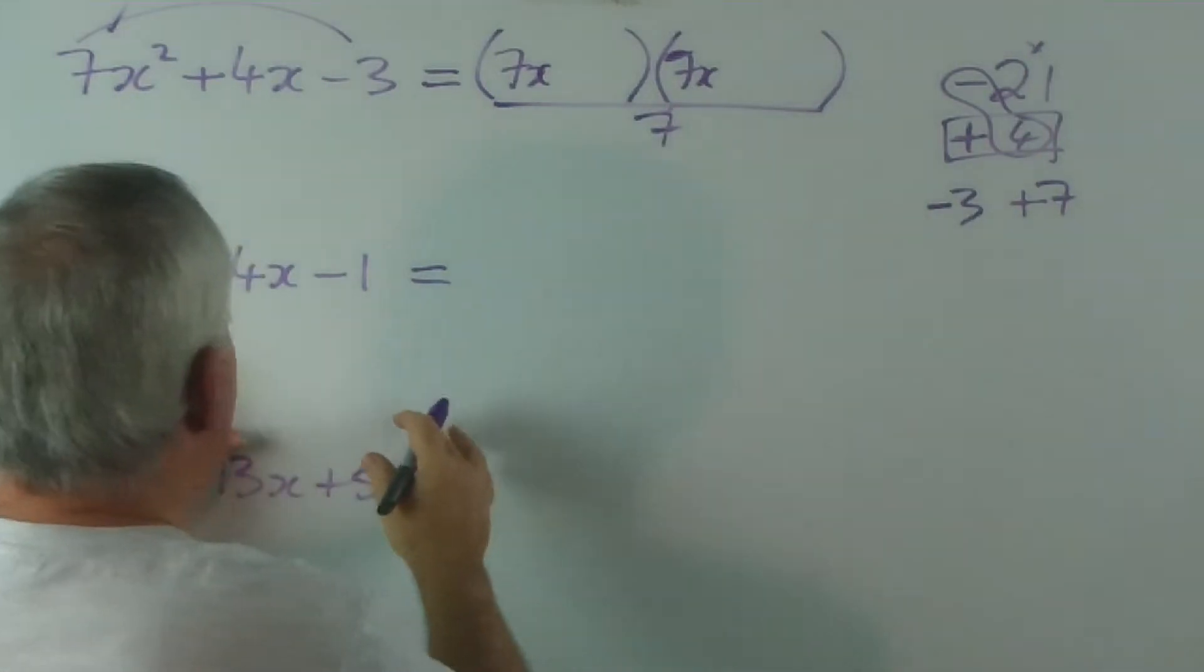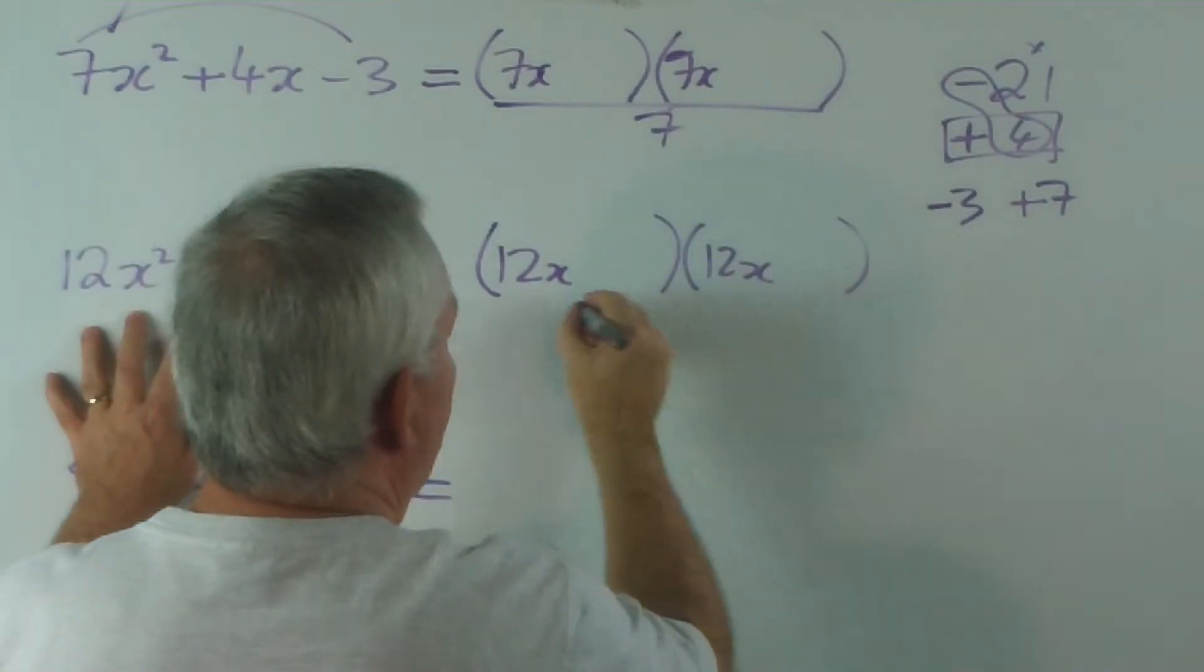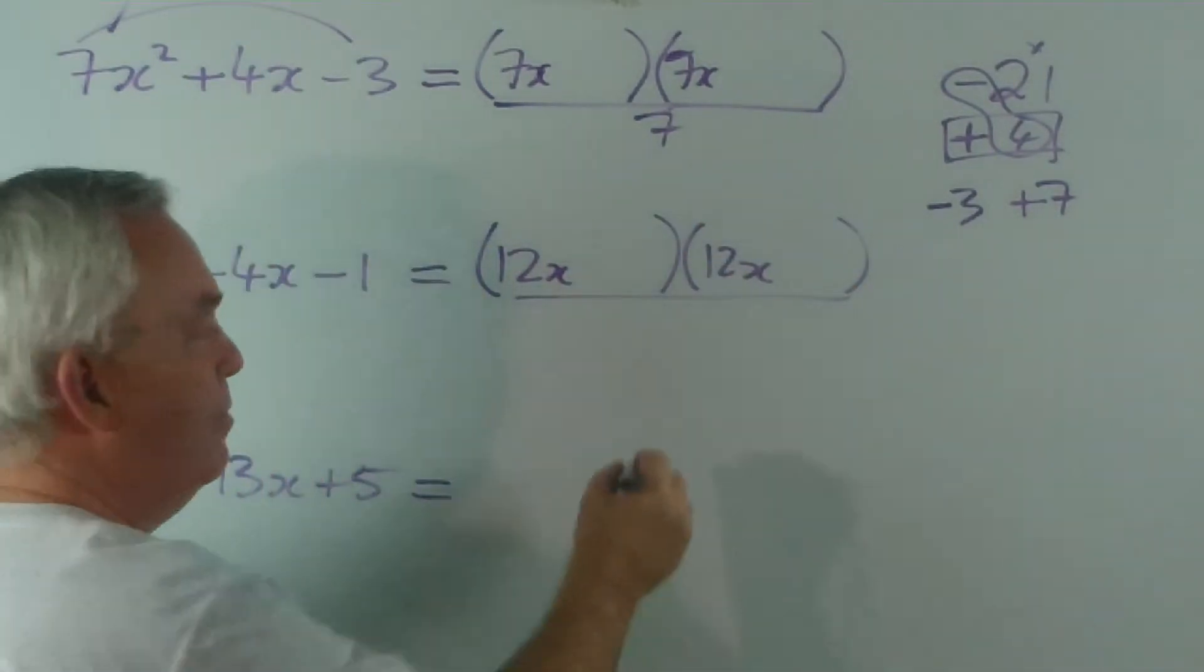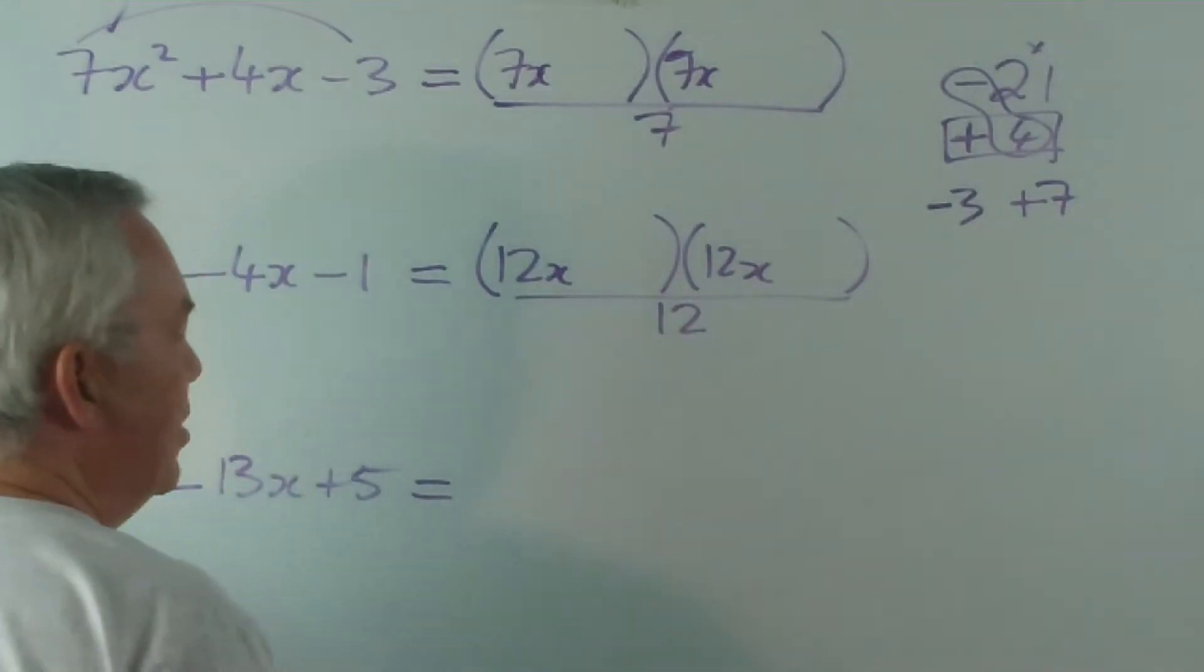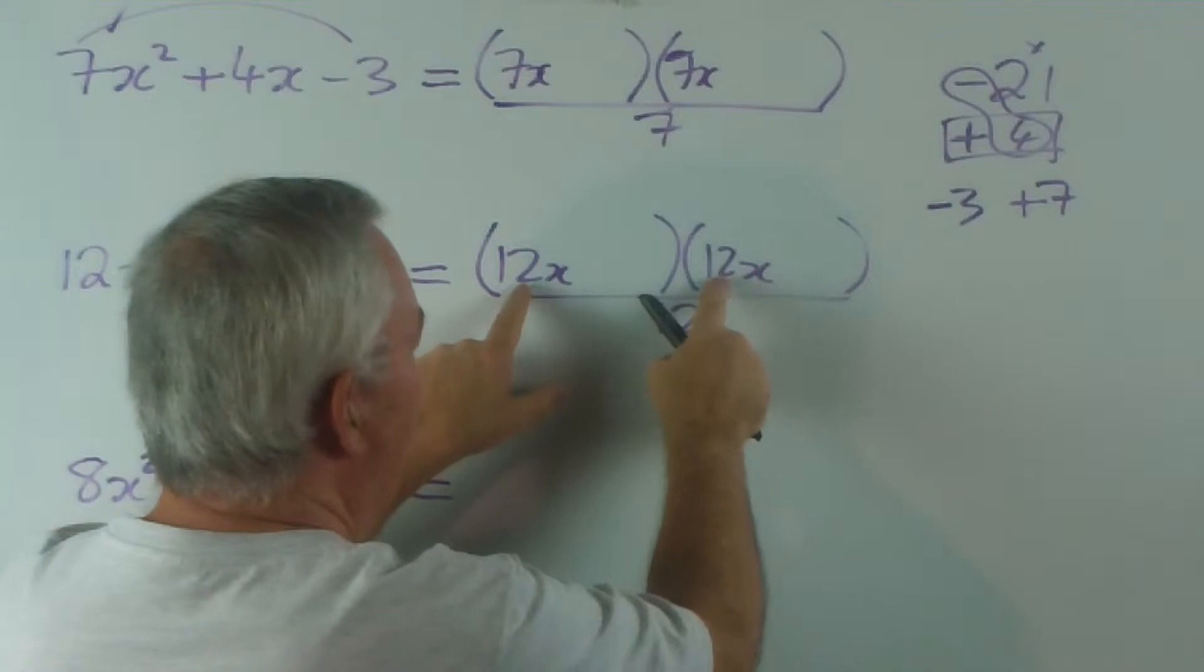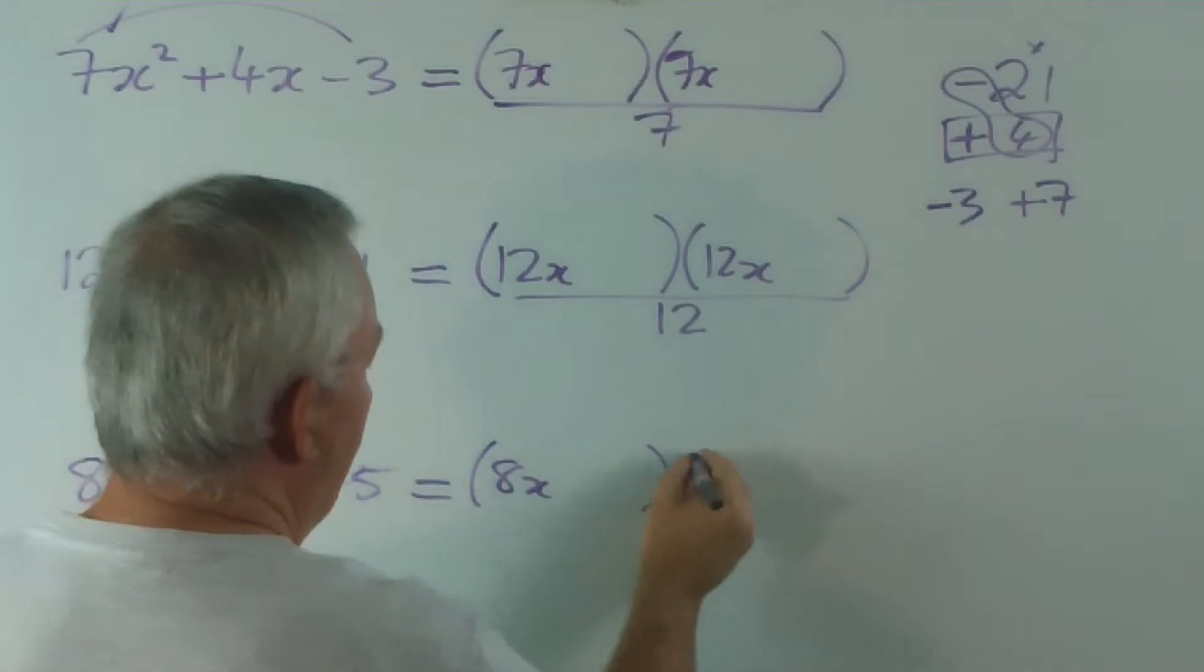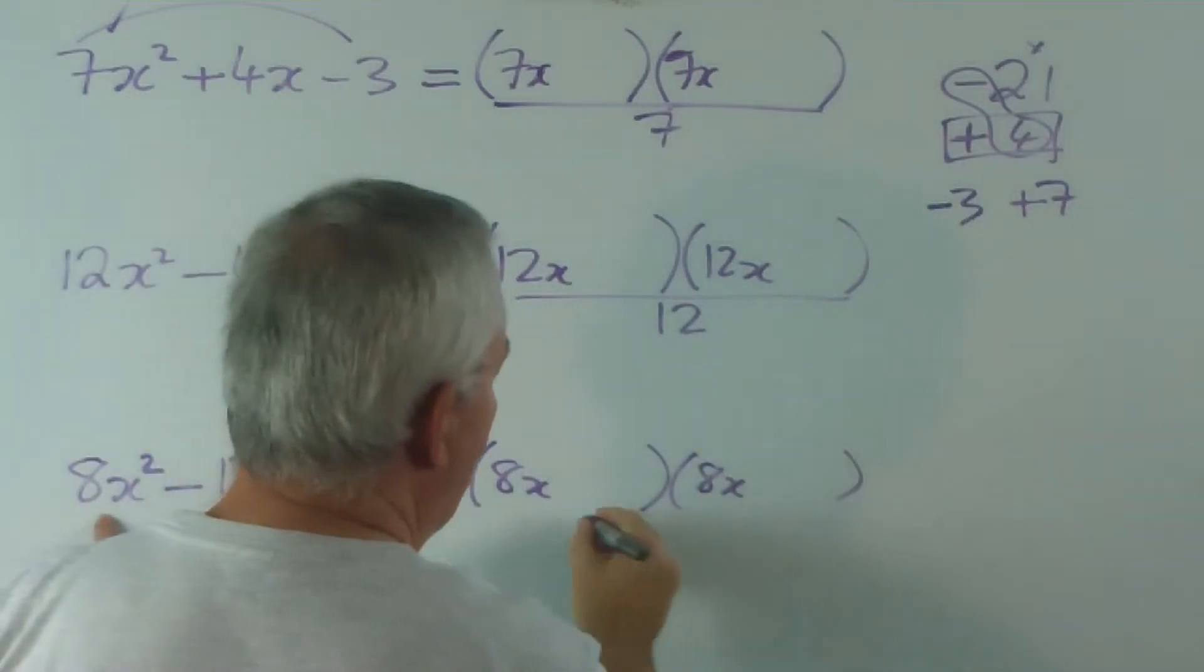So, this one, for example, we would start off by writing 12x... 12x... divide by... you guessed it... 12... simply because we don't know how this 12 has to be broken up. And here we would have 8x... 8x... and 8.